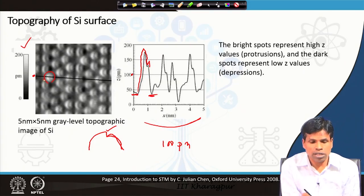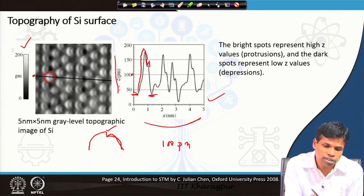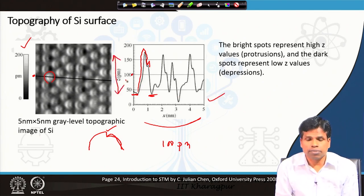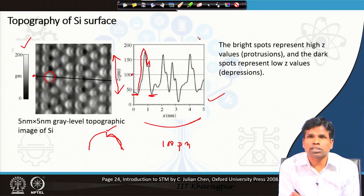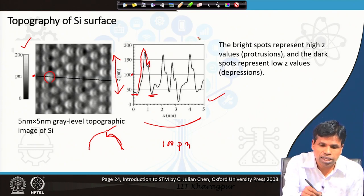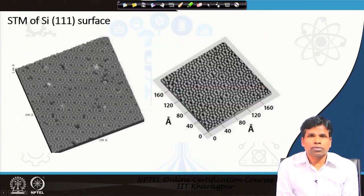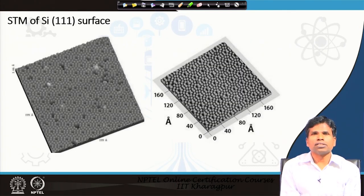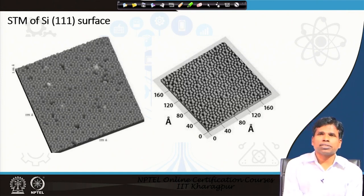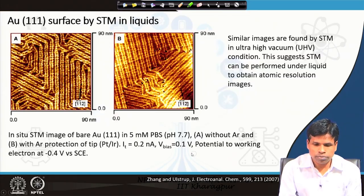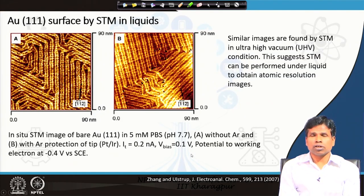This type of height measurement — z-direction measurement — was not possible in scanning electron microscopes or helium ion microscopes. However, scanning probe techniques provide z-resolution or depth resolution at the atomic scale, in the picometer scale. On the silicon (111) surface, you can clearly see the atomic arrangements using the scanning tunneling microscope.